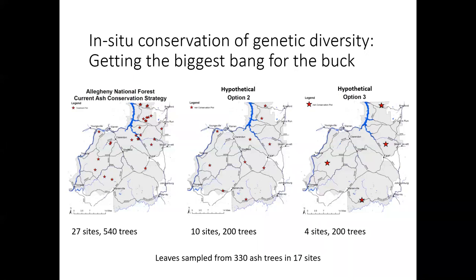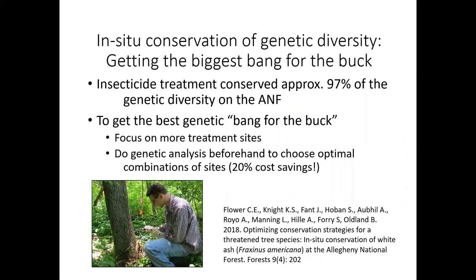One of our questions was how do you get the biggest bang for your buck — preserving 540 trees across 27 sites versus maybe 200 trees in fewer sites? What's the best way to preserve the most genetic diversity for the least amount of money? Charlie led work to sample leaves from 330 trees in 17 sites. What he found is that the best way to get the biggest bang for your buck is to focus on more treatment sites rather than more trees within a site, and to do genetic analysis beforehand — working with Jeremy Font and Charlie Hovind to choose optimal combinations of sites with different genetics that are complementary to each other. By doing that, you could have a 20% cost savings, which really adds up as you need to repeat these treatments every three years. We also found that insecticide treatment of only 540 trees across this huge landscape conserved approximately 97% of the genetic diversity of the Allegheny National Forest.